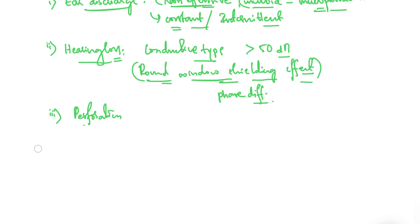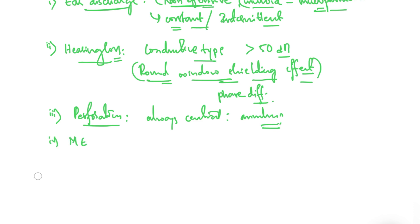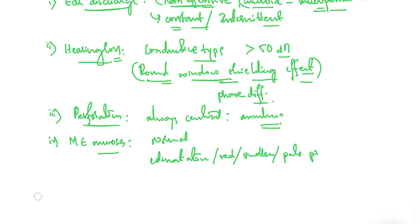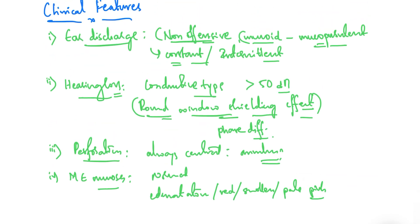Regarding the perforation in the Tubotympanic type: it is always central — it may be anterior, posterior, or inferior to the handle of malleus, and sometimes may extend to include the annular ring, giving a subtotal perforation, but it remains central. The middle ear mucosa may appear normal or, when inflamed, may be edematous, red, swollen, or pale pink.